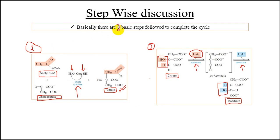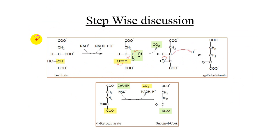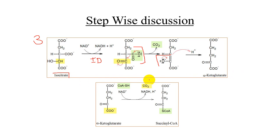There are eight basic steps in the TCA cycle — compared to ten steps in glycolysis. In the third step, oxidative decarboxylation takes place: isocitrate is converted to alpha-ketoglutarate. The enzyme that catalyzes this reaction is isocitrate dehydrogenase.